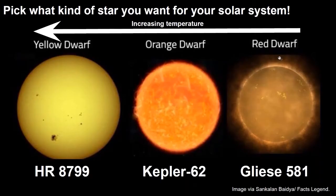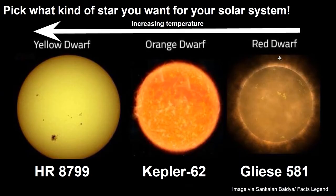Before we get started, you'll need to decide what type of star is in the center of your solar system. Your options are Gliese 581, a red dwarf star, which means it is a small cool temperature star; Kepler 62, an orange dwarf star, which means it is a small medium temperature star; or HR 8799, a yellow dwarf star, which means it is a small hot star. You don't need to worry about picking the medium temperature star in order to have a habitable zone in your solar system — you'll have one no matter which star you pick.